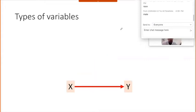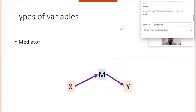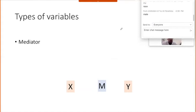A mediator is a variable M that lies in the pathway from X to Y. X cannot reach Y without the mediation of M — meaning the association between X and Y happens through the mediating process of the mediator.